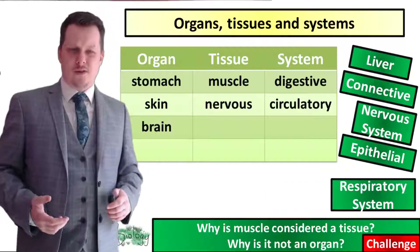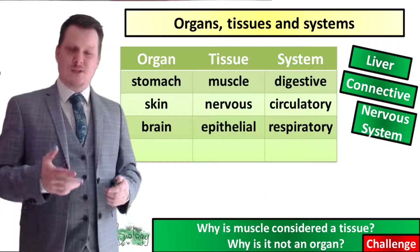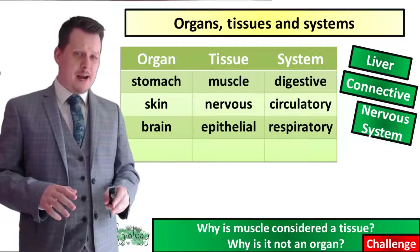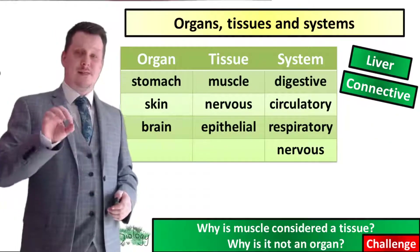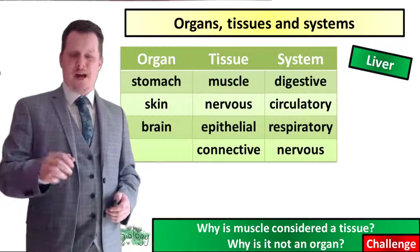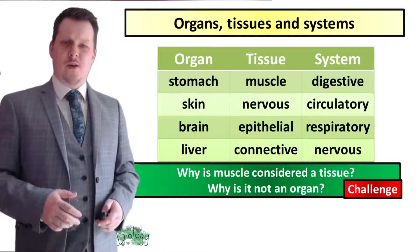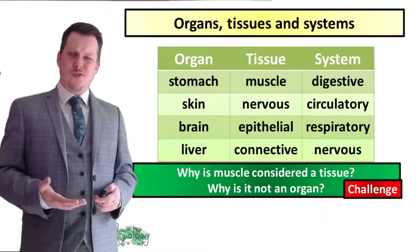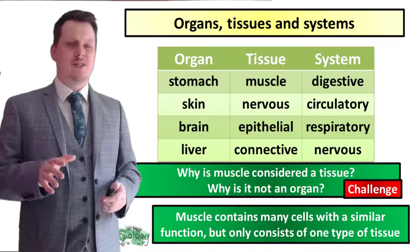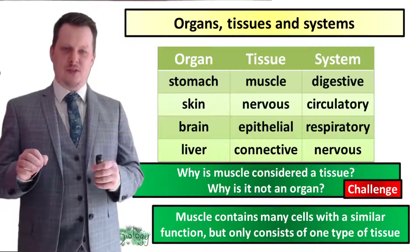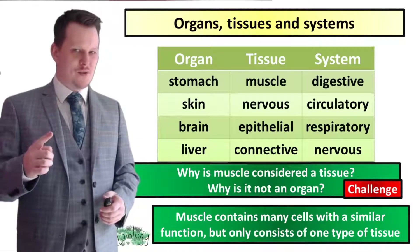Brain is an organ, the respiratory system, epithelial tissue — remember that's what our skin is made out of. We have the nervous system, connective tissue, and the liver is another example of an organ. Why is muscle considered a tissue and not an organ? Because muscle contains many cells with a similar function, but it only contains one type of tissue.